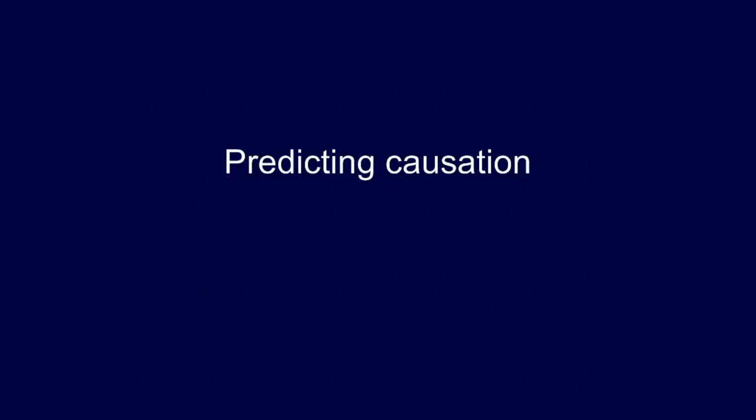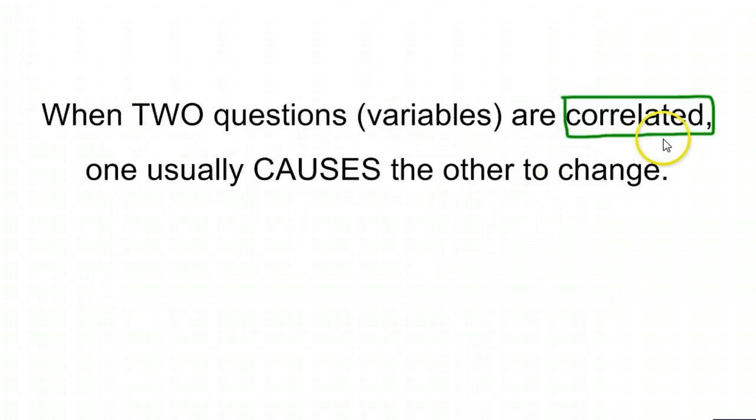We know that when two things are correlated, that means they are related, linked, and dependent. However, it doesn't necessarily tell us what causes what. What is the reason that these things are linked? So when we have two variables that are correlated, often one of them is causing the other to change. Let's look at what that might be.